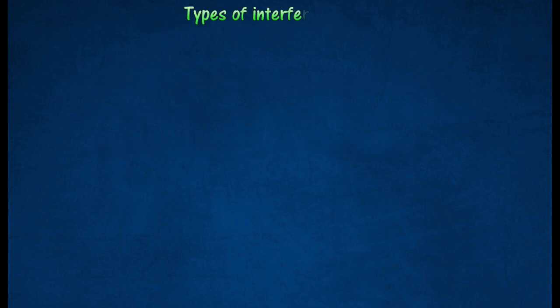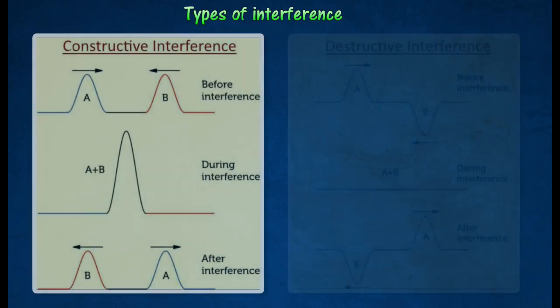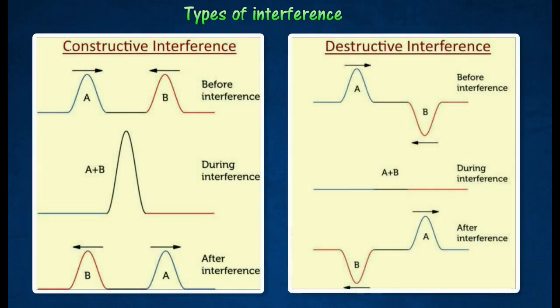Wave interference occurs when two waves that are traveling in opposite directions meet. The two waves pass through each other, and this affects their amplitude.